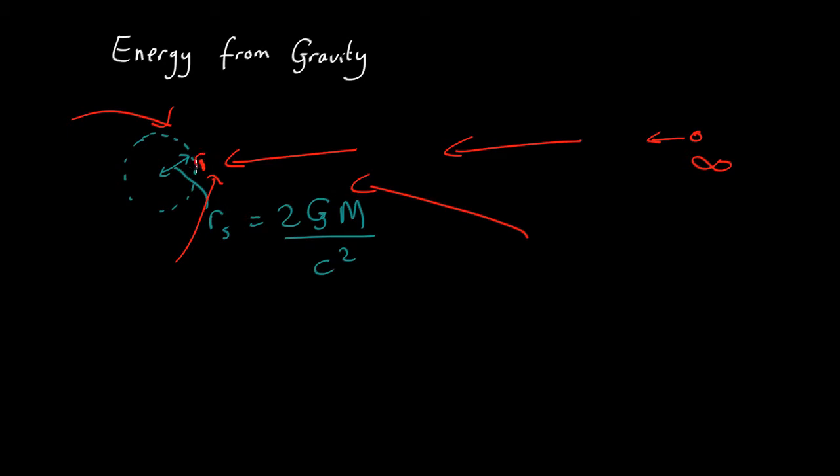So how much energy does something have if it falls from infinity to just above the event horizon? Well, the easiest way to calculate this is using potential energy. Gravitational potential energy, you're usually used to it as potential energy equals mgh. That's the form normally used for equations on Earth. This, however, is just an approximation. It's valid for when things are near the surface of the Earth.